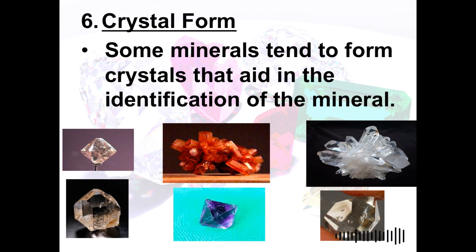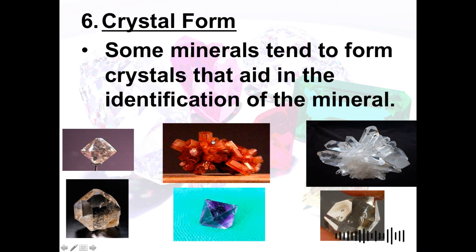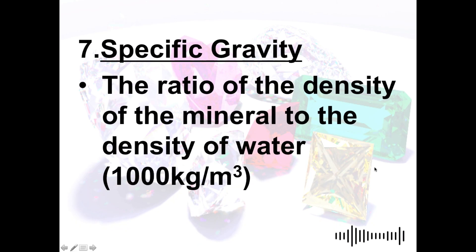Next is crystal form. Some minerals tend to form crystals that aid in the identification of the mineral. As you can see with this type of crystal, we can easily identify what kind of mineral it is.